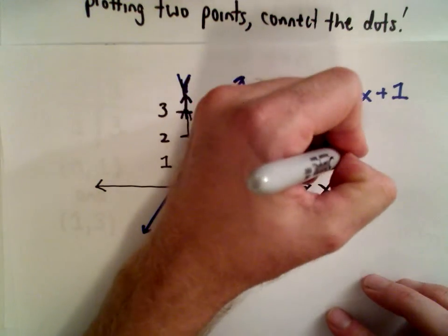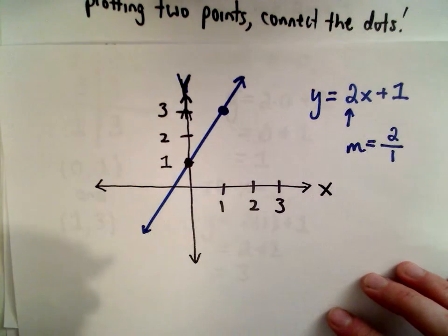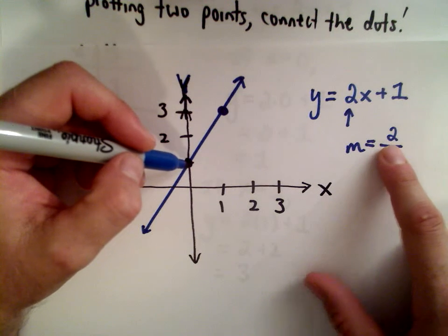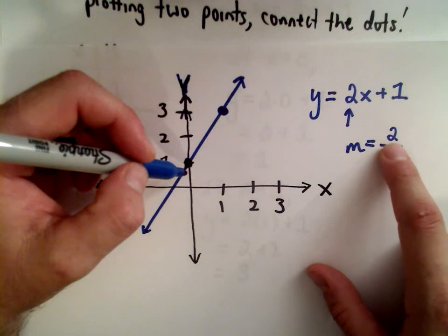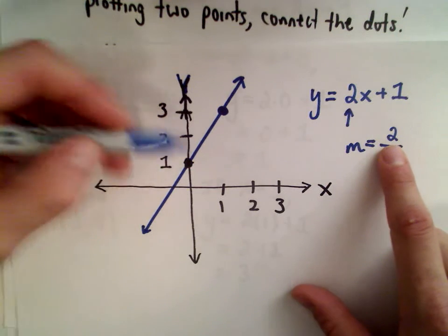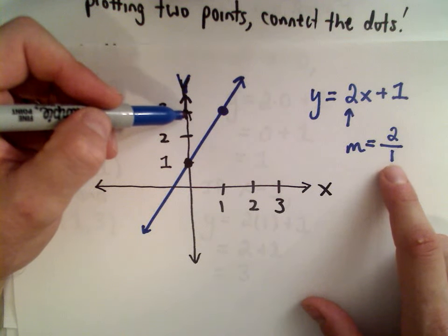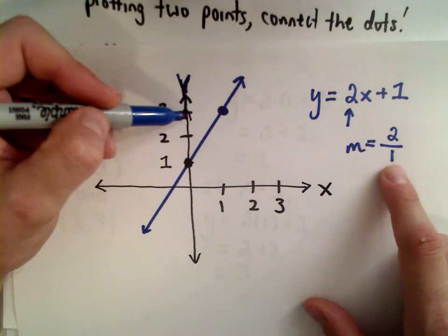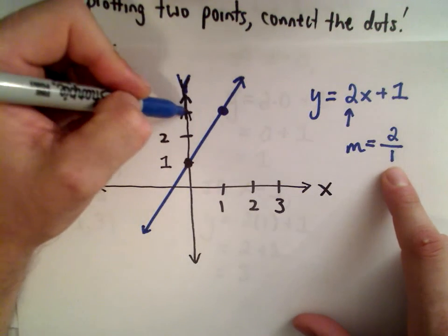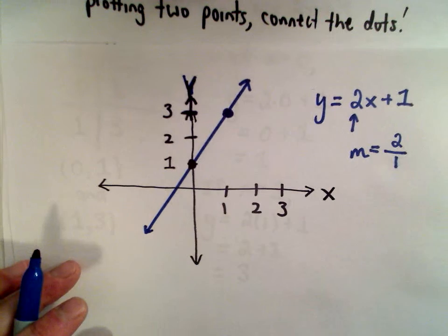The number m is the slope, and we can write 2 as a fraction — 2 over 1. Once you know one point, the slope gives you directions to the next point. The numerator tells you how much to go up or down — positive 2 means go up 2. The denominator tells you how much to move left or right — positive 1 means move one unit to the right — and there's another point on your graph.